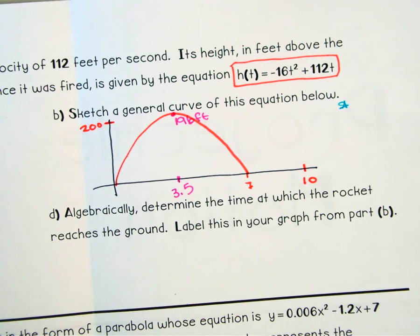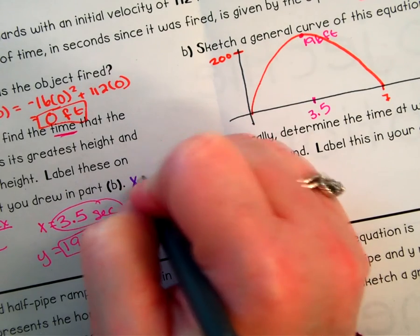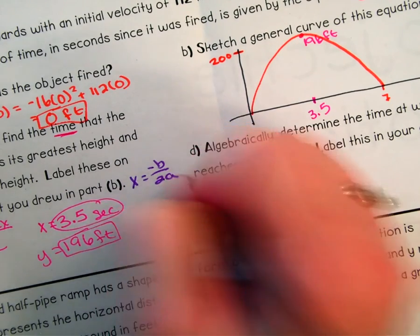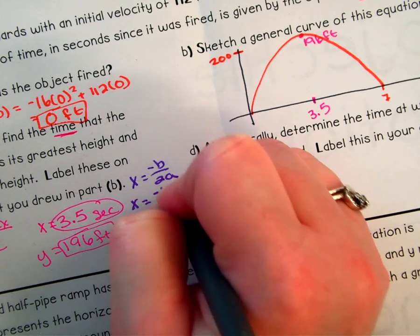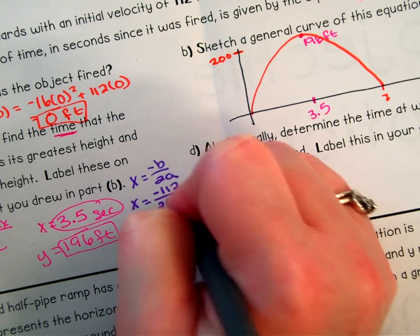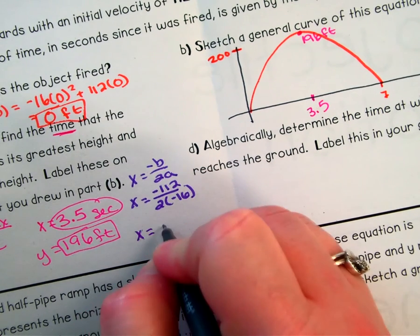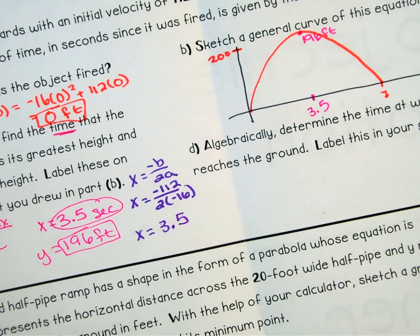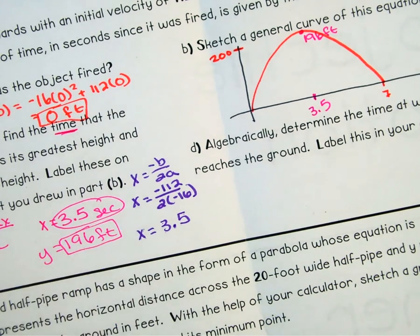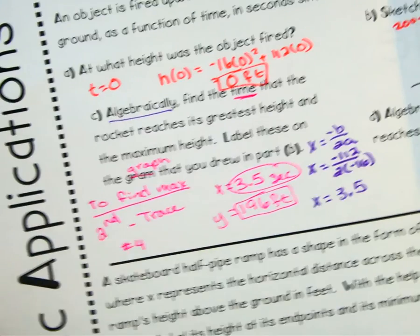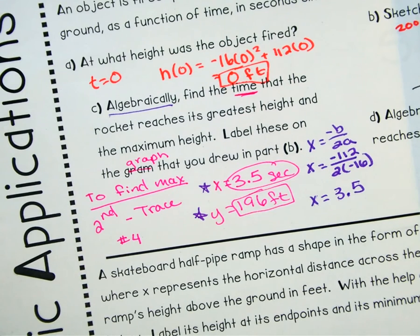Now let's say you didn't have your calculator or you don't remember how to do your second trace to find your maximum. Algebraically, we could find it by doing our x equals negative b over 2a. Looking at my equation, my b is 112. My a is negative 16. So that gives me a negative 32 in my denominator. 112 divided by 32 gives us our 3.5. So that's algebraically how you can find your 3.5, which is what it told us to do. It did tell us to algebraically find it. This was just confirming on the calculator how we found it.